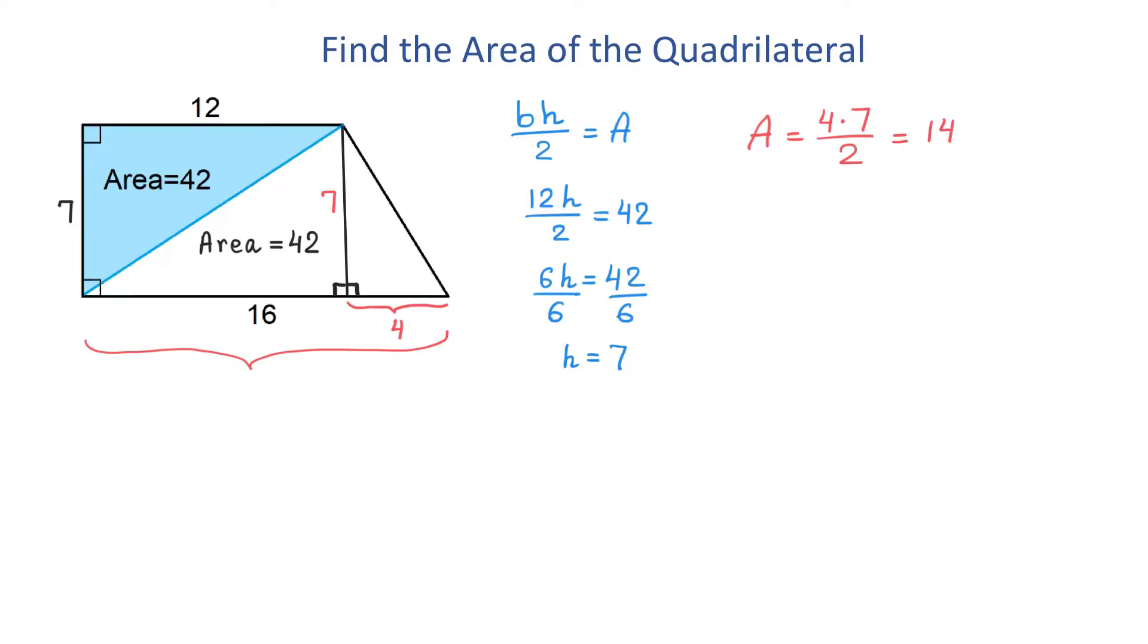So, we just found that the area of this triangle is 14 square units. And now, to find the area of the entire quadrilateral, we will add 42, 42, and 14. So, the total area equals 42 plus 42 plus 14, and this makes 98 square units.